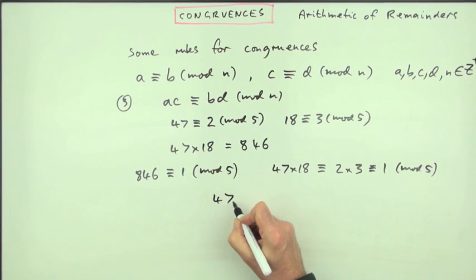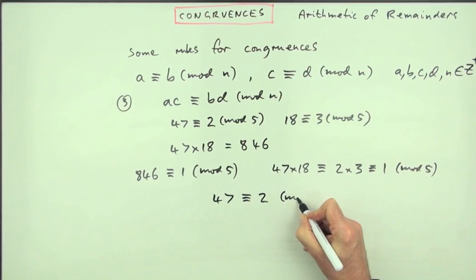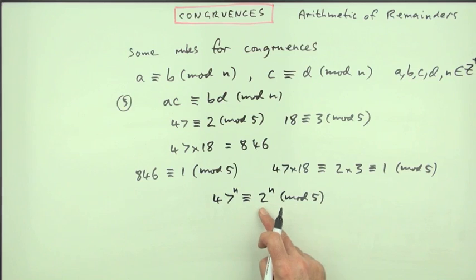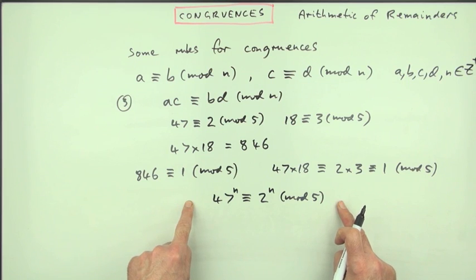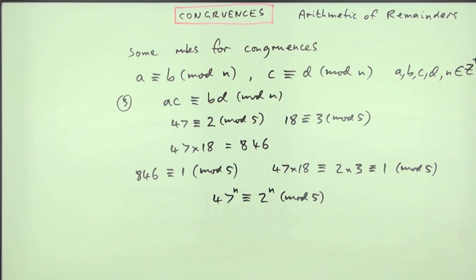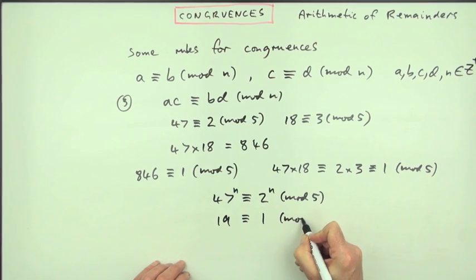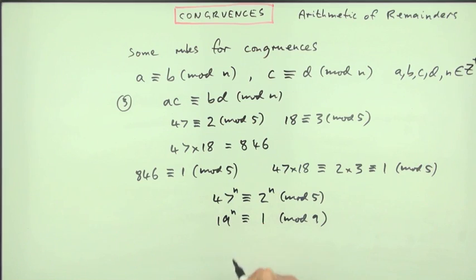Of course, that would also extend to powers. If 47 is congruent to 2 mod 5, then any power of 47 would be congruent to the same power of 2. That's not quite so useful because you'd have to work out what this thing came to. It does become useful when you've got something which is congruent to 1. So for instance, 19 is congruent to 1 mod 9. Which means 19 to the power n will be congruent to 1 to the power n, which means 19 to the power n is congruent to 1 mod 9 for any power.